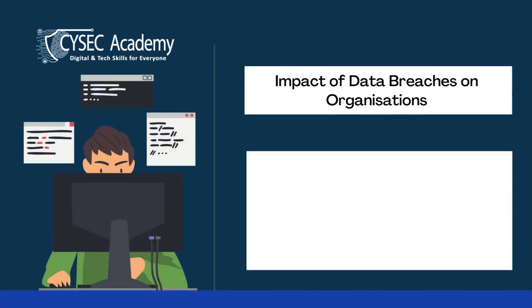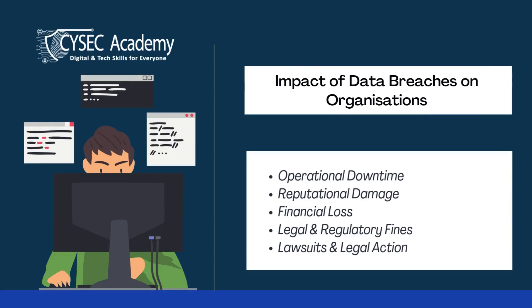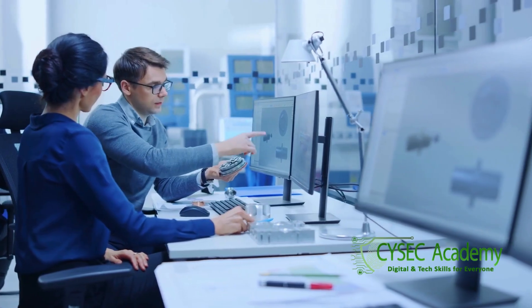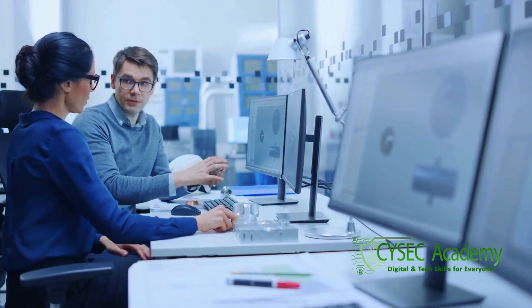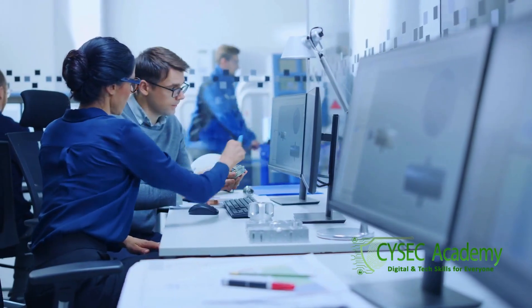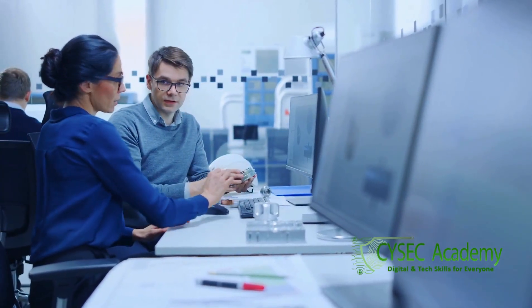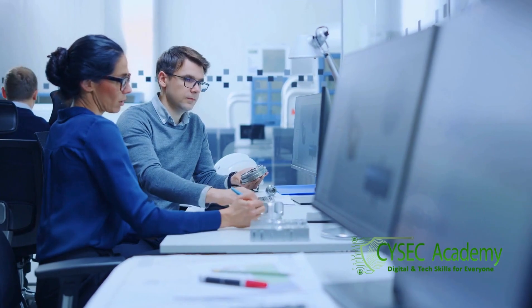The impact of a data breach can include: one, operational downtime — systems or networks may need to be taken offline for investigation, containment, and remediation; two, reputational damage — public outrage, loss of customer trust, and negative media coverage; and three, financial loss — including legal and regulatory fines and lawsuits. These impacts underscore the critical need for swift action by the SOC and incident response teams.